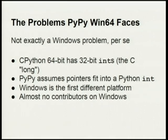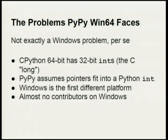The problem with Windows 64 is not really a Windows problem — I'm not angry with Windows. It just happens to be the first platform where PyPy has difficulties creating itself as an exact copy of a running Python. In the case of Windows 64, we have a 32-bit int type which is not large enough to hold a pointer type, and PyPy needs this assumption to hold all the time. Windows 64 is the first situation where PyPy really has to be more flexible and toss certain assumptions.